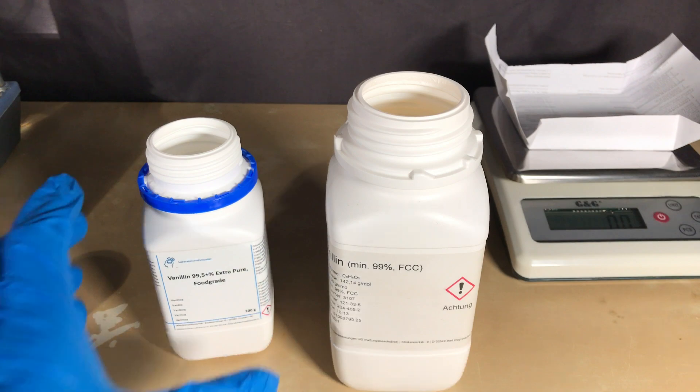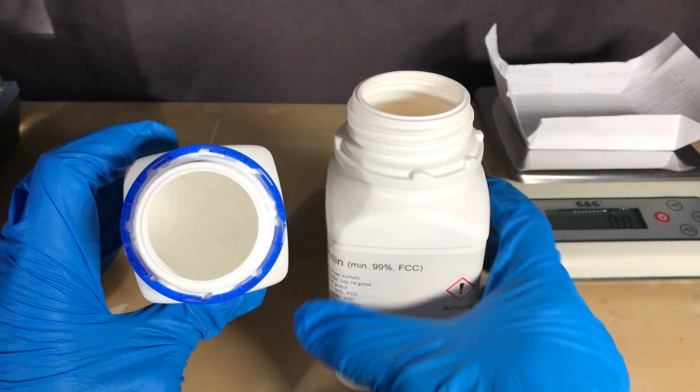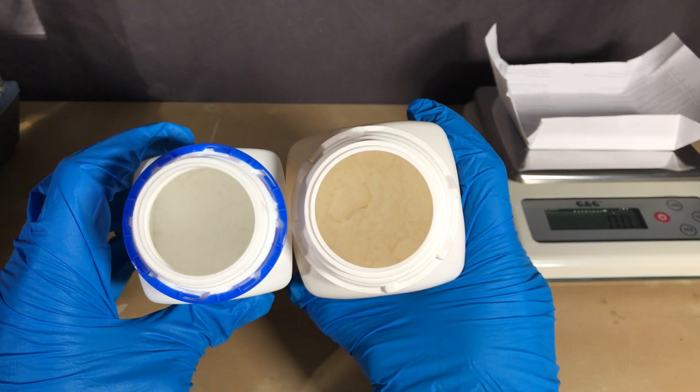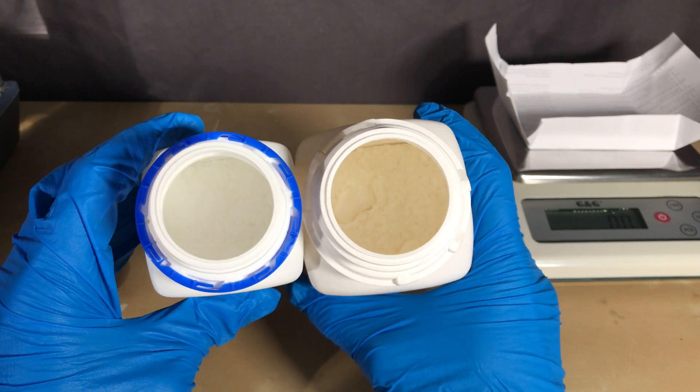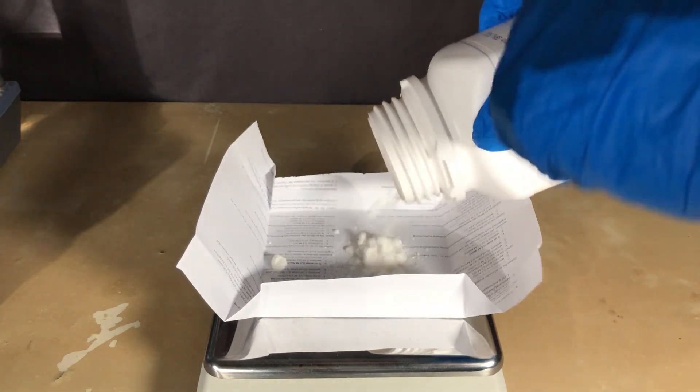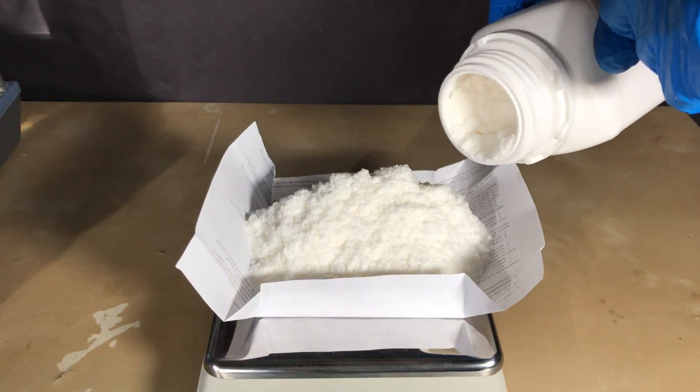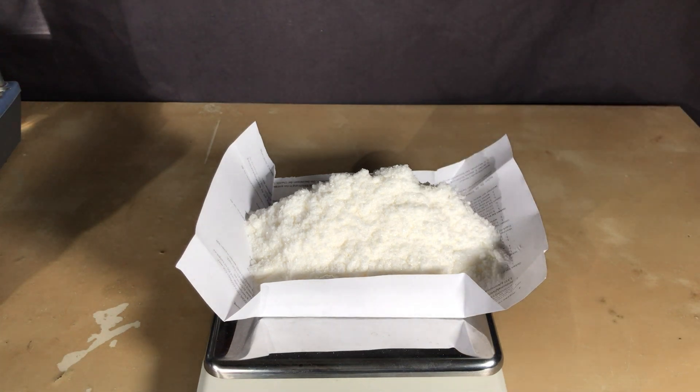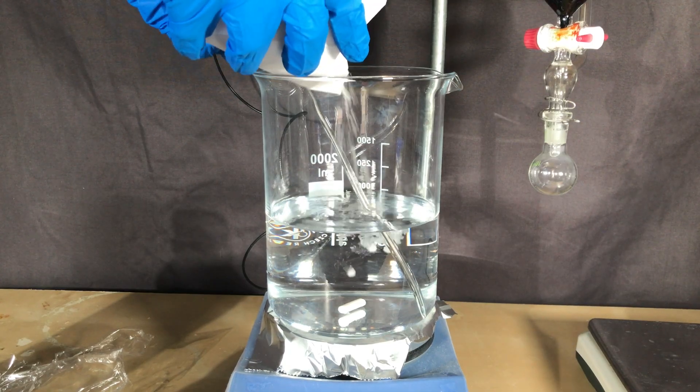The vanillin I just showed you is from a different company and it looks somewhat yellow. The LaboratoriumDiscounter vanillin looks perfectly white, so it's a sign of purity I'd say. I am still going to use the vanillin which looks less pure because I need the very pure stuff for a different project which you are going to see soon. I ended up using 152.2 grams of vanillin and a liter of methanol.